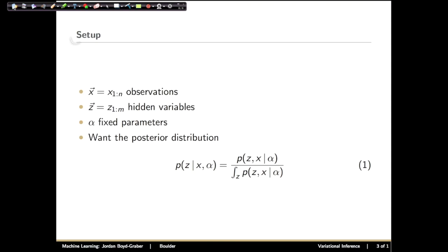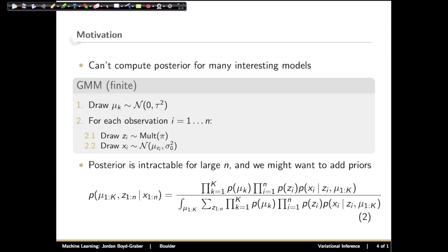So let's talk about the general setup. This should be a bit of a review. We have some observations x, some hidden variables z, and some parameters alpha. We want to figure out what the posterior distribution is — what is the most likely distribution over our latent variables given our observations and parameters? For example, for a Gaussian mixture model, our data are the x's and we have latent variables z and mu: the cluster assignments and the cluster means.